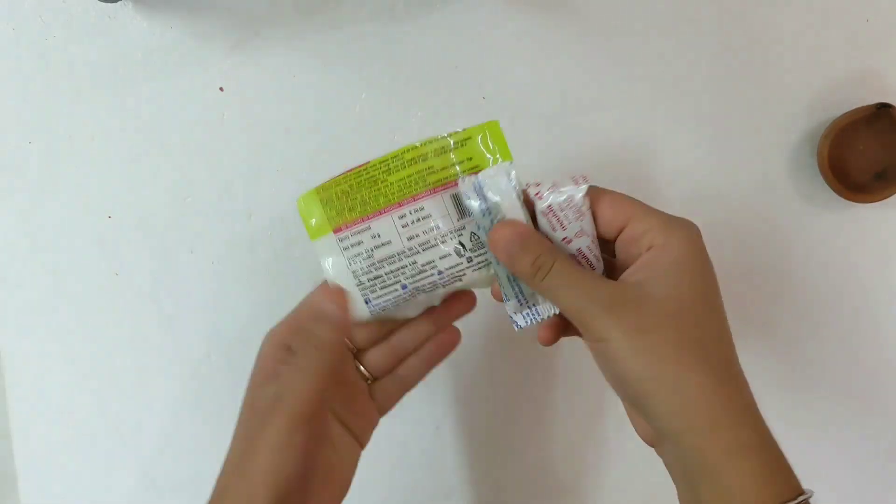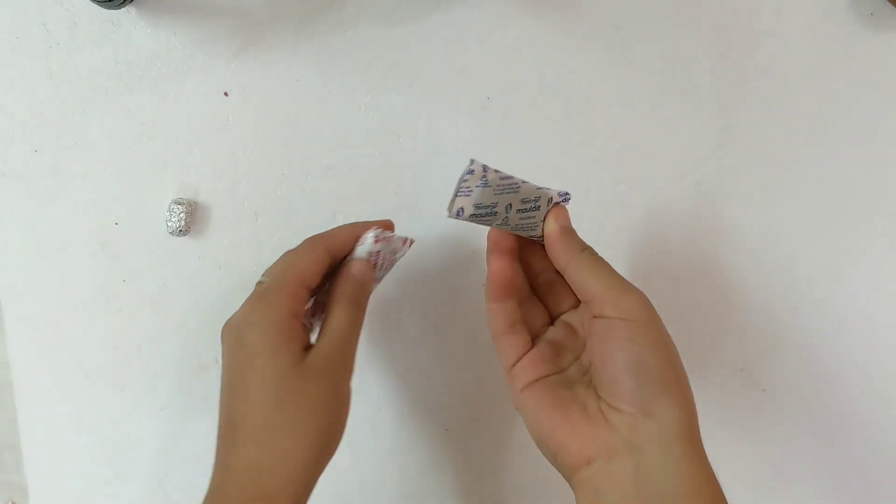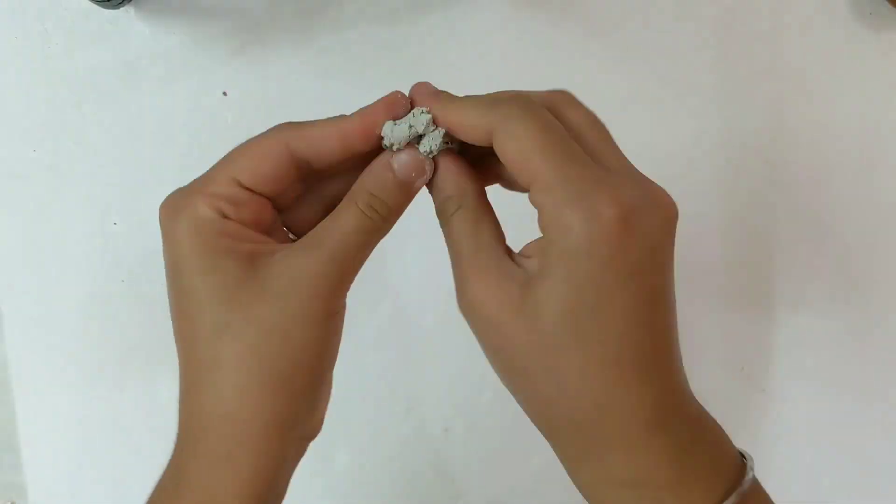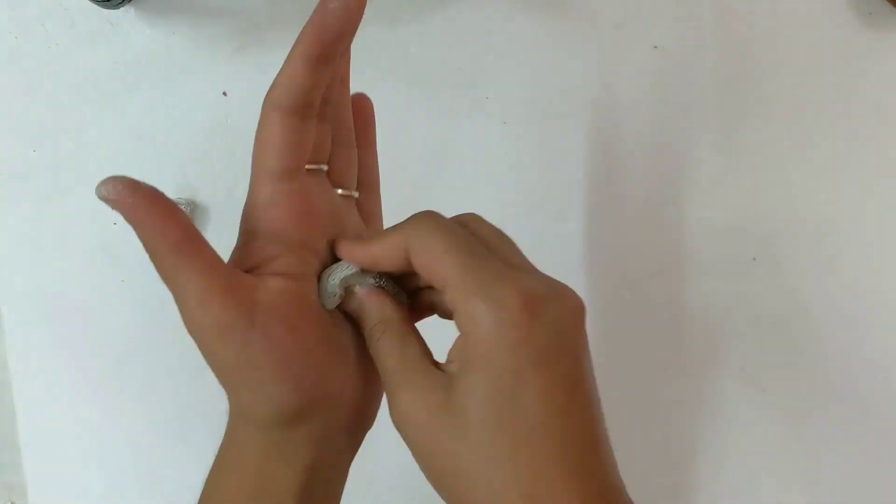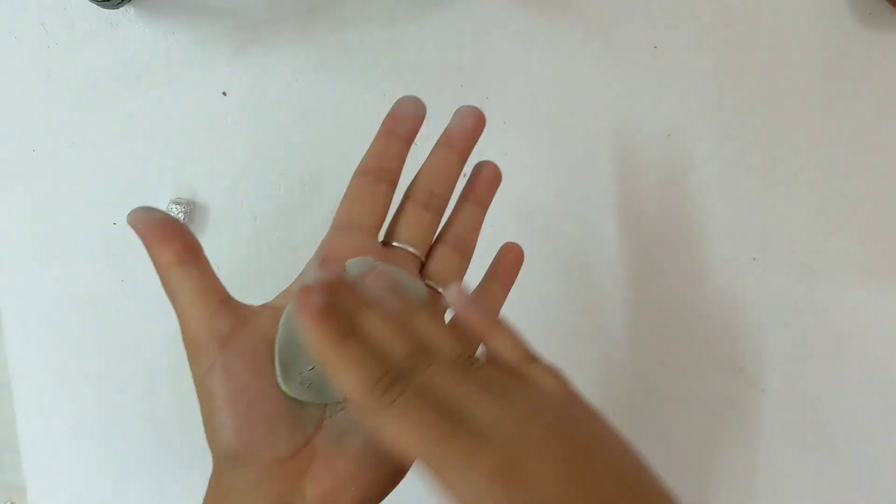So next is Fevicryl molded clay. It comes with the resin base and hardener. Mix these two things in a ratio of two to one. Mix it properly until it gives the gray shade like this.